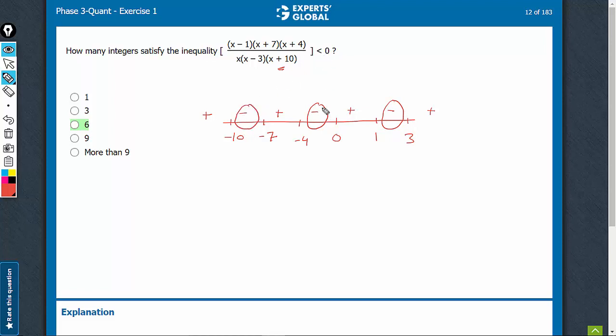There is no equal to sign here, and therefore we cannot take the borders. We have to take only the intermediate values.